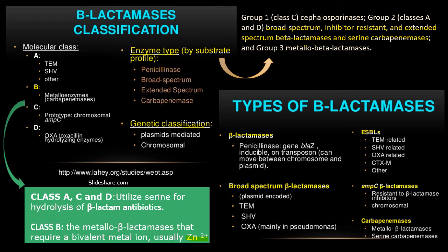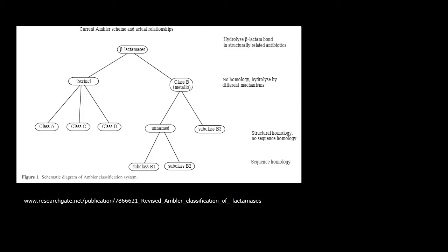ESBL is the current global issue we are facing. According to the Ambler classification in the article I referred, you will get a flowchart — a schematic diagram. Beta-lactamases are classified as serine or metallo. If serine is the active hydrolysis component in the reaction, they are classified as class A, C, and D. If they require a metal ion for hydrolysis, they have further subclasses.